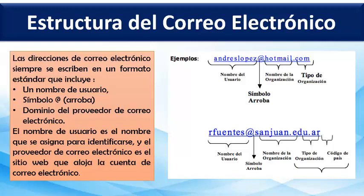El nombre de usuario es el nombre que se asigna para identificarse, y el proveedor de correo electrónico es el sitio web que aloja la cuenta. En el pasado, las personas utilizaban una cuenta proporcionada por las empresas que facilitaron el acceso a internet. Hoy en día, es cada vez más común el uso de un servicio de correo electrónico gratuito basado en la web, también conocido como correo web. Las tres principales proveedores son Yahoo, Outlook.com de Microsoft, que antes era Hotmail, y Gmail de Google. Estos proveedores son populares porque permiten acceder a una cuenta desde cualquier lugar con una conexión a internet.